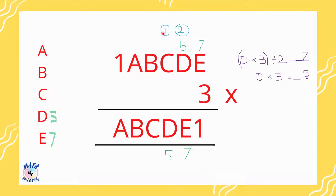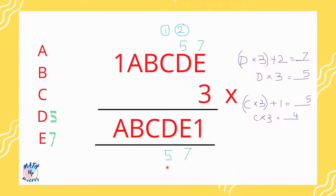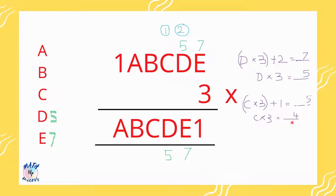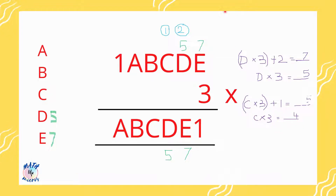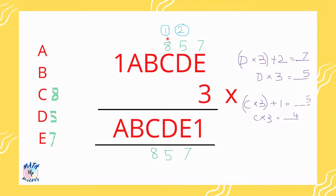c times 3 with the carry-over 1 added gives a number ending in 5. So c times 3 alone ends in 4, since 5 minus 1 is 4. What times 3 gives a number ending in 4? That is 8, since 8 times 3 is 24. So I assume c to be 8 and substitute it in both the number and the answer. Continuing: 8 times 3 is 24, plus carry-over 1 is 25 — so 5 is placed and 2 is carried over.